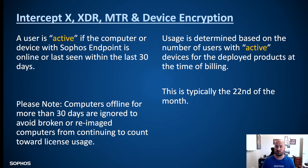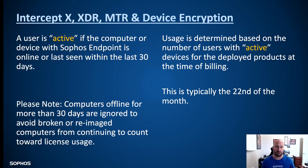Usage is going to be determined based on the number of users with active devices at the time billing is taken, which is typically done around the 22nd of the month. Regarding offline devices: if a device is offline for more than 30 days and falls outside of the billing cycle, that offline device no longer counts towards usage. Even if it is attached to a user, it will not count towards usage for that particular user.